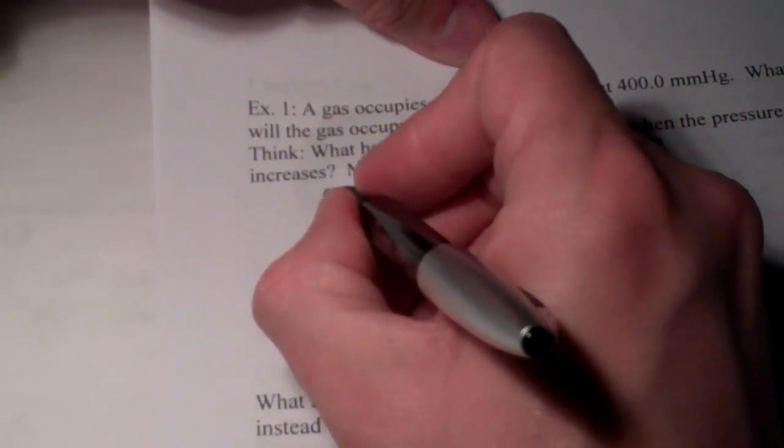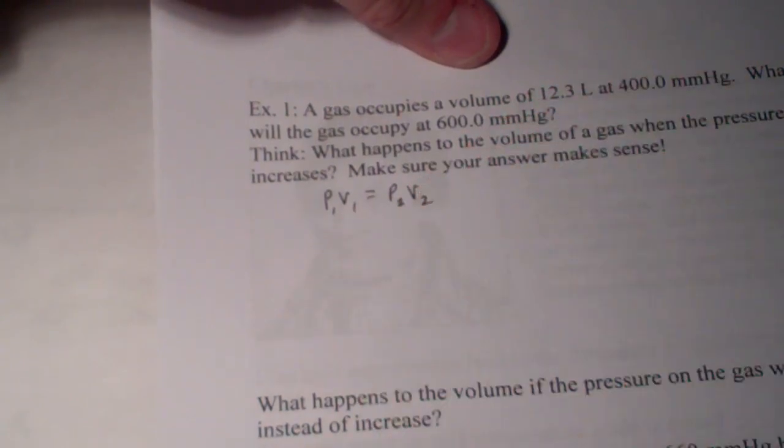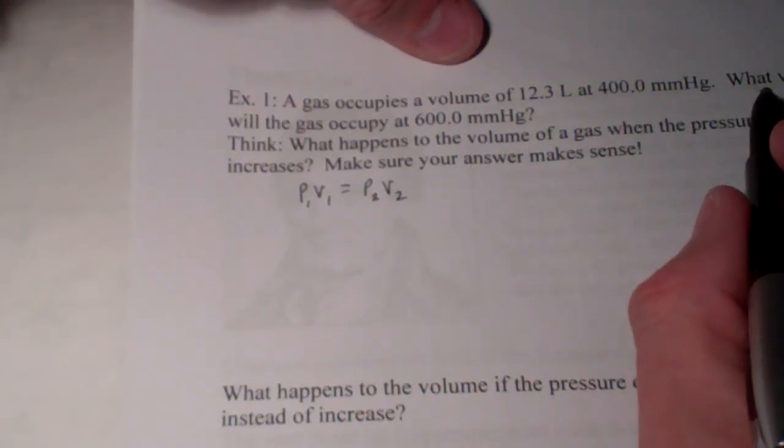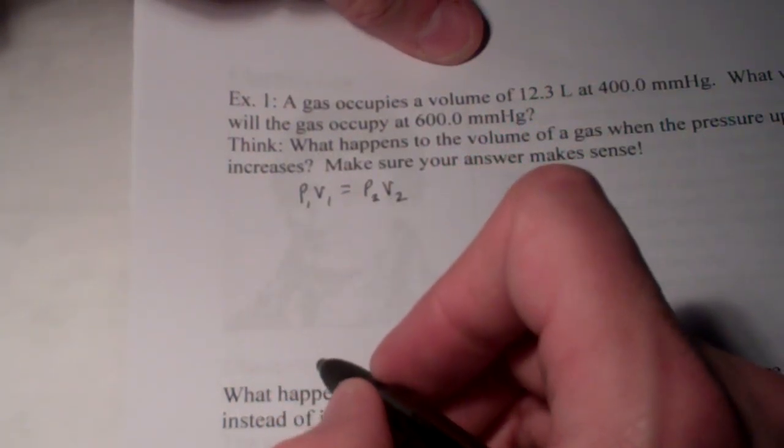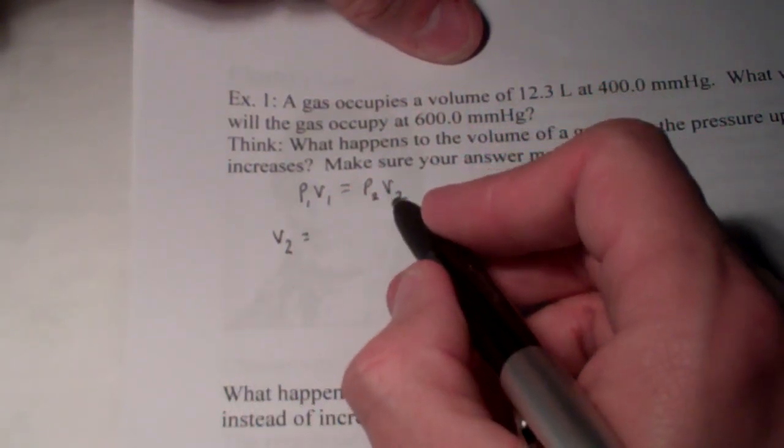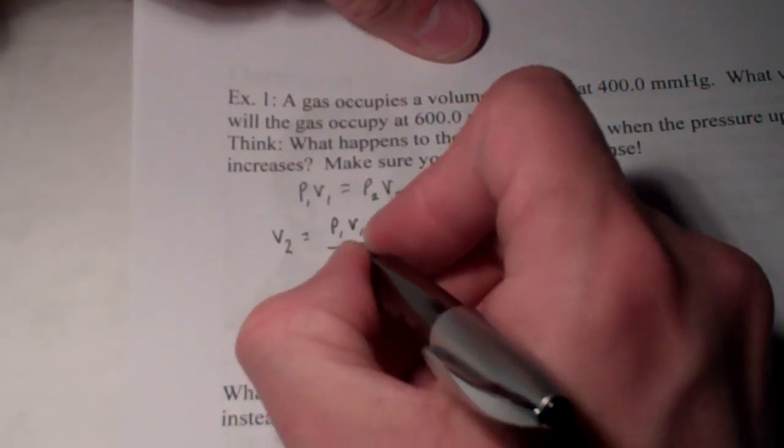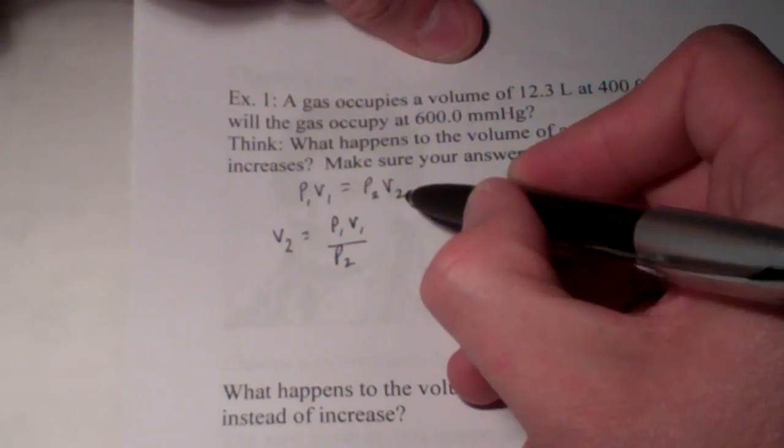Now think. What did we just say happens to the volume of a gas when the pressure upon it increases? Pressure increases. Inversely proportional means that if one goes up, the other has to go down. So when I'm all finished, my answer should be smaller than 12.3. So we're going to do it two ways. First, we'll use the plug-and-chug method, P1 V1 equals P2 V2. And it looks like we are going to solve for, let's see, what volume will the gas occupy at the new pressure? So we're going to solve for V2. So wouldn't V2 be equal to P1 V1 over P2?